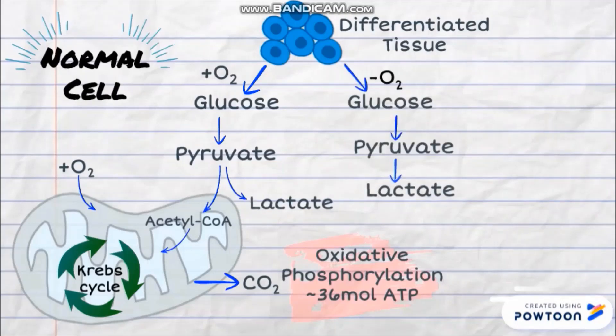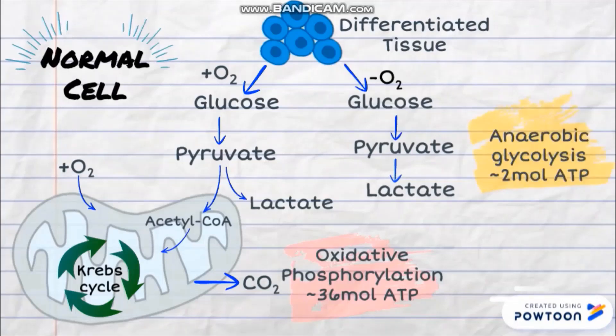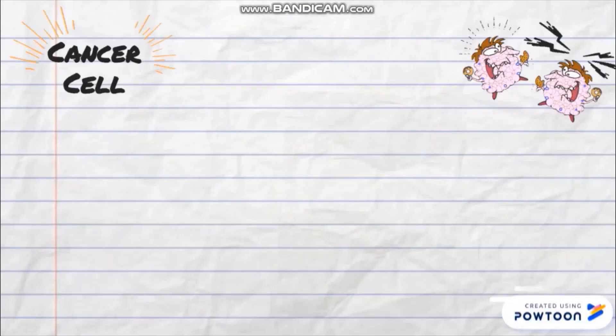In the absence of oxygen, cells convert pyruvate to lactate and generate only two moles of ATP. This process is known as anaerobic glycolysis.